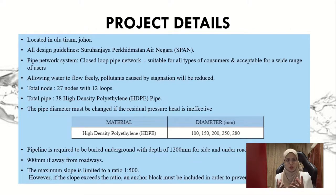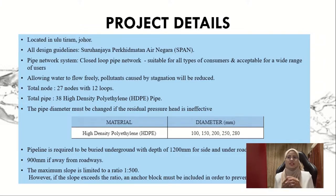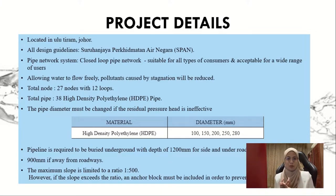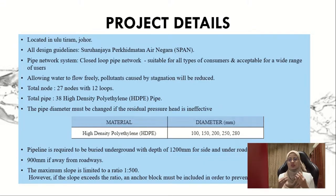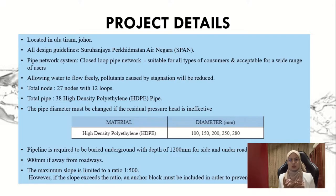For example, if one pipe in the proposed site is broken or damaged and needs to be stopped for maintenance work, other consumers will still receive water supply through the closed-loop pipe network system. We also use a variety of pipe diameters because the size must be changed if the residual pressure head is ineffective. The diameters used are 100 mm, 150 mm, 200 mm, 250 mm, and 280 mm — overall five pipe diameter sizes.